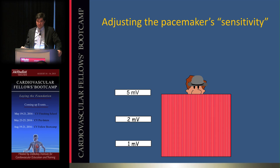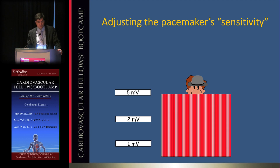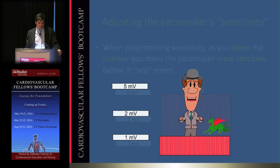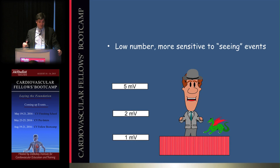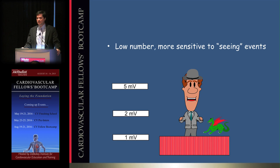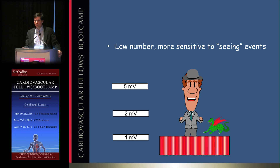Sensing sensitivity settings can be counterintuitive. If sensitivity is set at 5 mV, only large signals are seen. Decreasing the number — for example to 1 mV — makes the device more sensitive and able to detect smaller signals. So to see more activity, decrease the sensitivity number rather than increasing it.